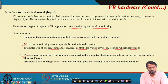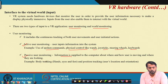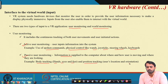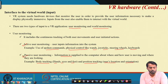In passive user monitoring, information is supplied to the computer about where and how the user is moving and looking inside the virtual environment. This can be achieved through body tracking — tracking hands, eyes, and feet — and position tracking, which monitors user location and orientation whenever there is motion with respect to the virtual environment. Both fall under the umbrella of passive user monitoring.